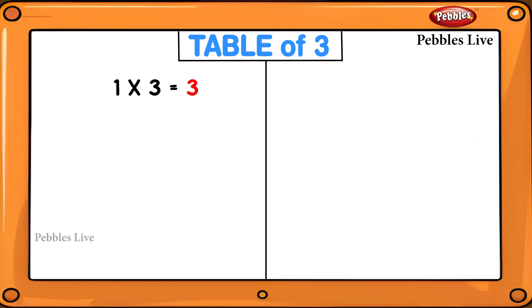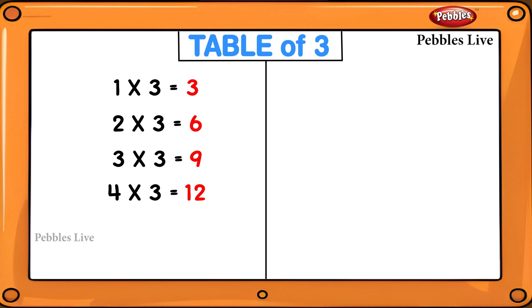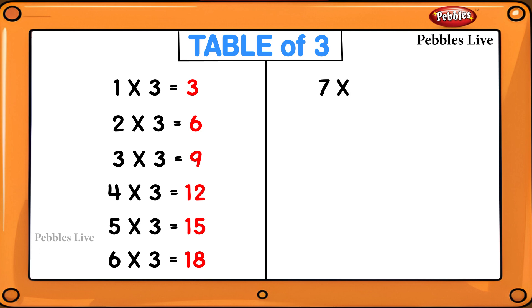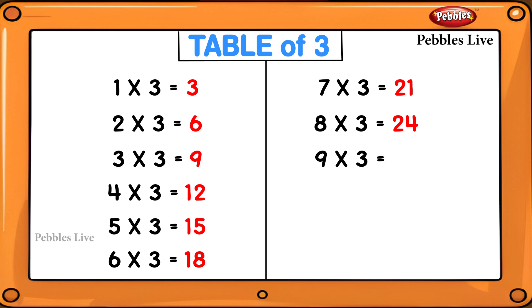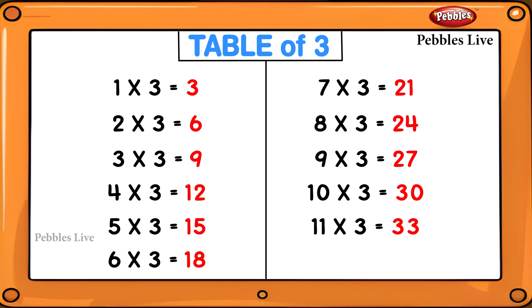1 threes are 3, 2 threes are 6, 3 threes are 9, 4 threes are 12, 5 threes are 15, 6 threes are 18, 7 threes are 21, 8 threes are 24, 9 threes are 27, 10 threes are 30, 11 threes are 33, 12 threes are 36.